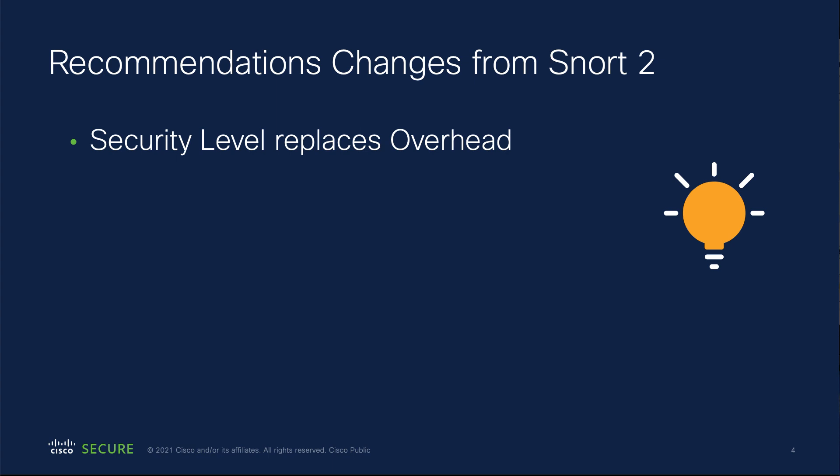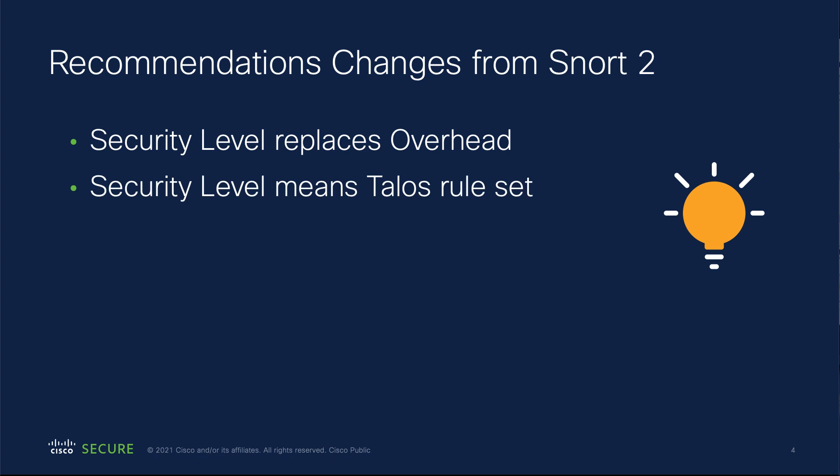Security level 1 is the same thing as the connectivity rule set, security level 2 is the balanced rule set, security level 3 is the security over connectivity rule set, and security level 4 is the max detection rule set. So we're using security levels now instead of overhead when configuring this. Security level means Talos rule set — honestly, overhead meant Talos rule set in Snort 2 too; we're just getting rid of that term and going back to what it really is.